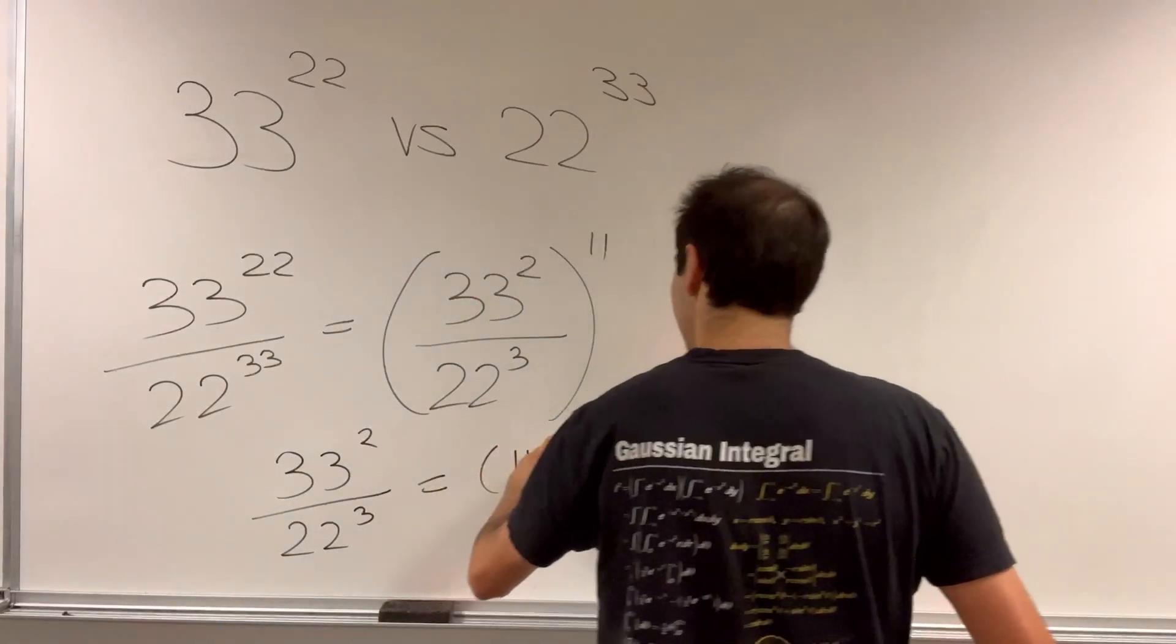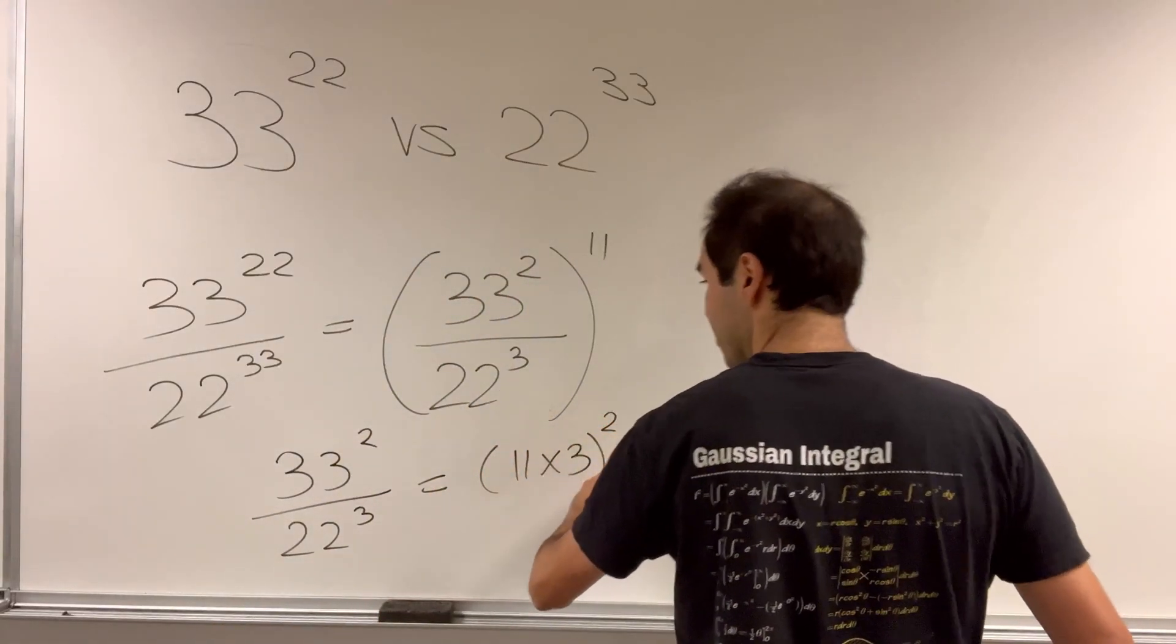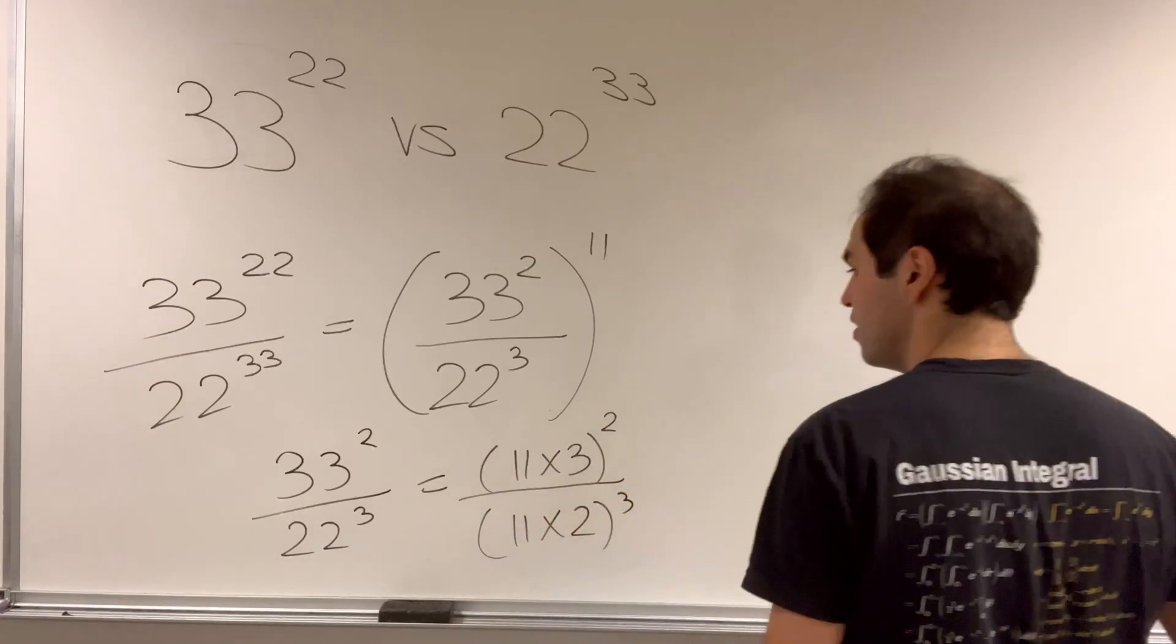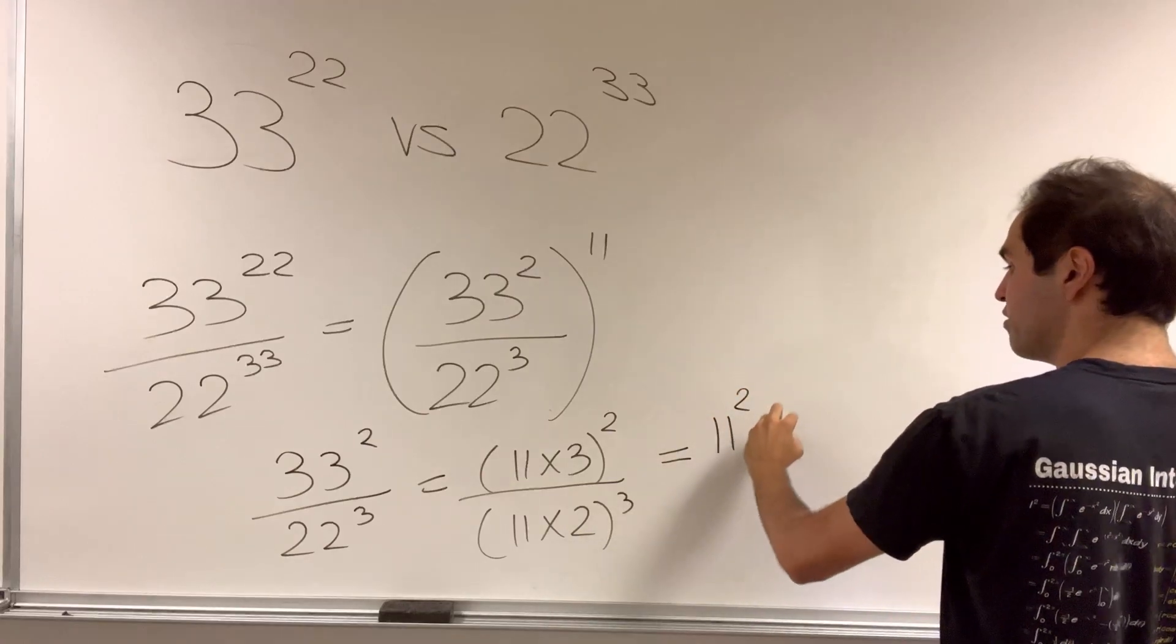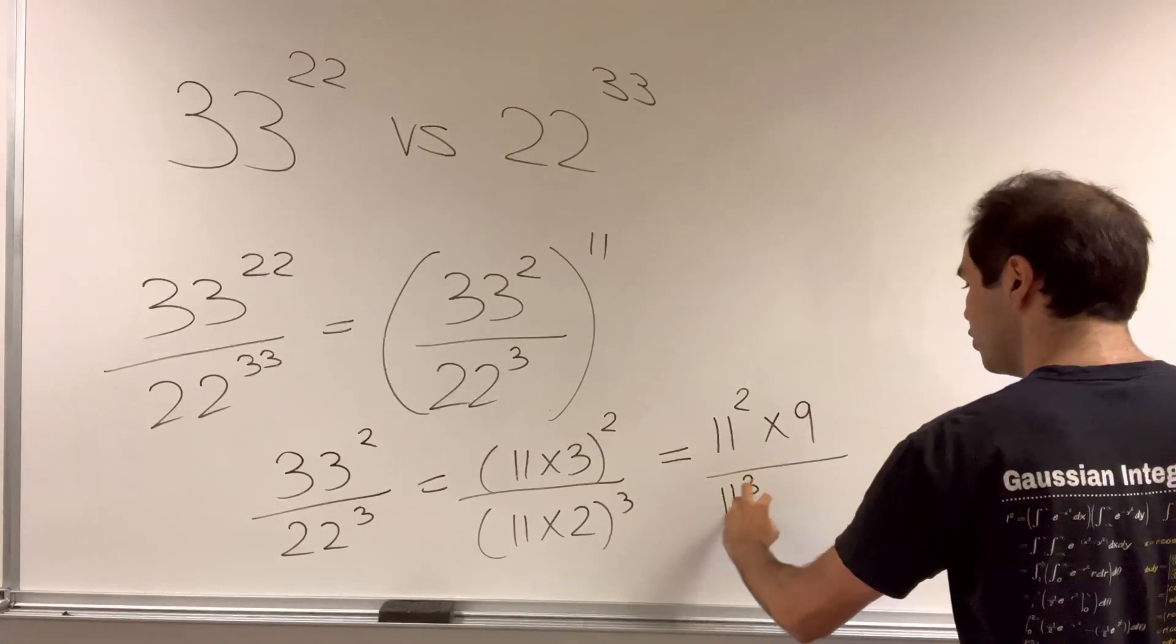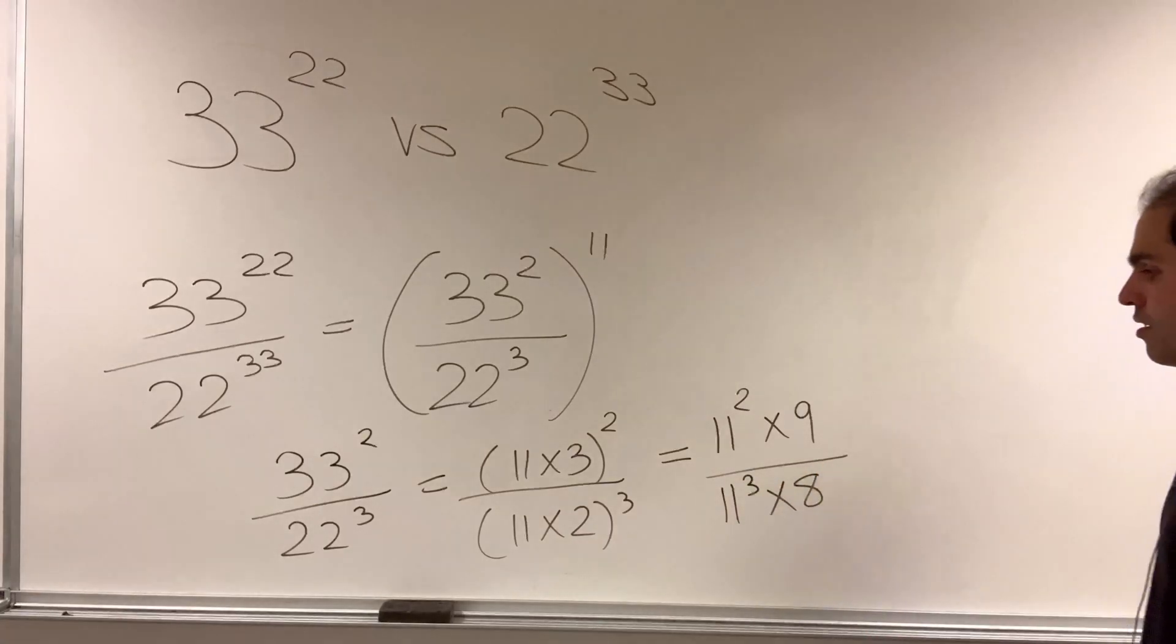that is, 11 times 3 squared over 11 times 2 cubed, which becomes 11 squared times 3 squared, 11 squared times 9 over 11 cubed times 8.